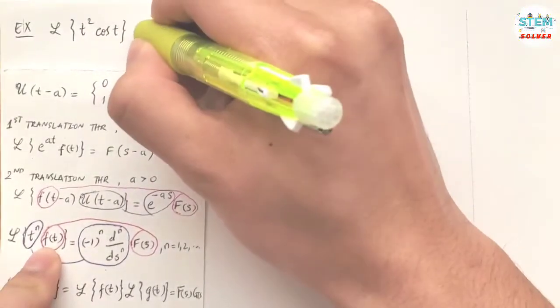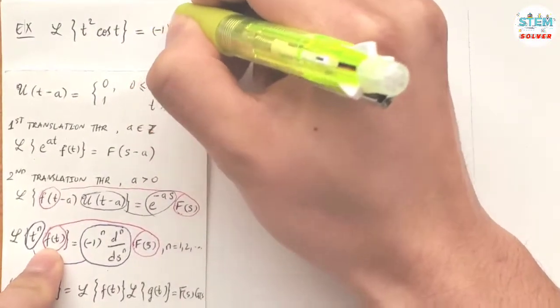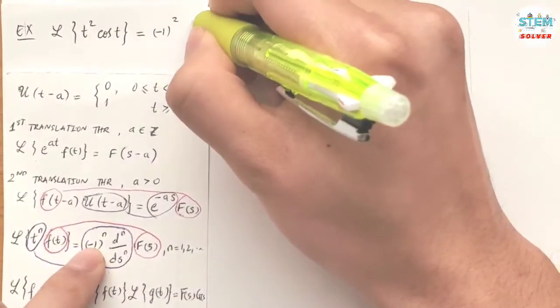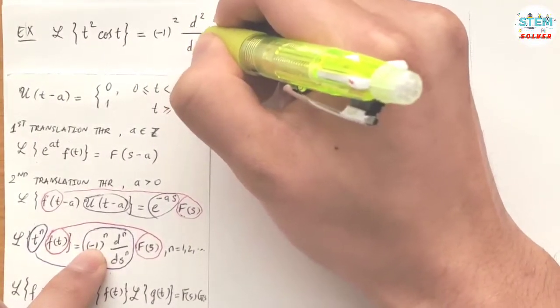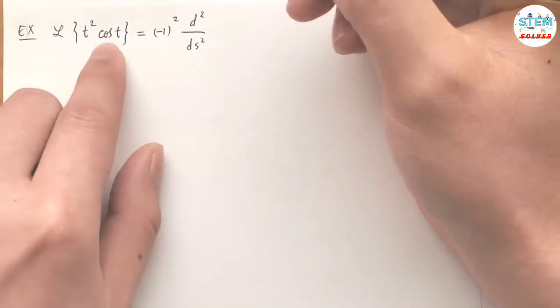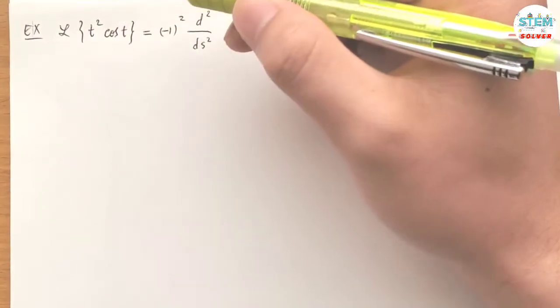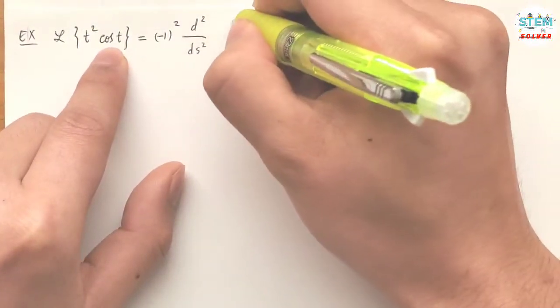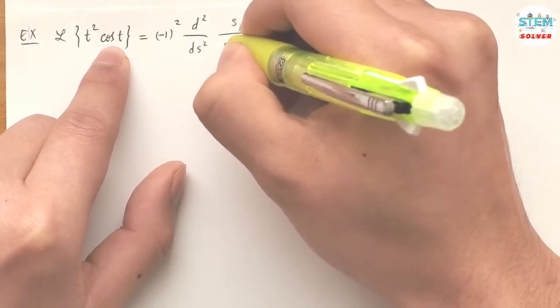Here I have t², which means I'm going to have (-1)² times the second derivative of the Laplace transform of cos(t). Taking the Laplace transform of cos(t) gives me s/(s²+1).